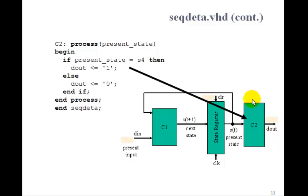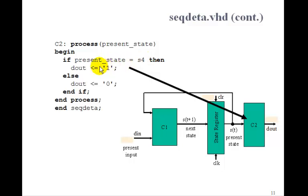Finally, we need a separate process for C2 to get the output. Since this is a Moore machine, it depends only on the present state. So process present state: if the present state is S4, then D out is 1 — we found the sequence 1, 1, 0, 1. Else D out is 0. So that's the entire VHDL program for implementing the state machine.